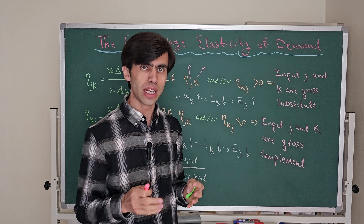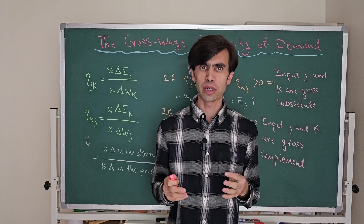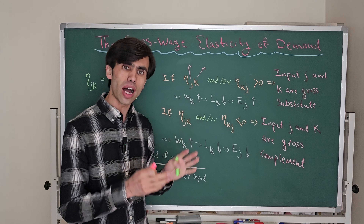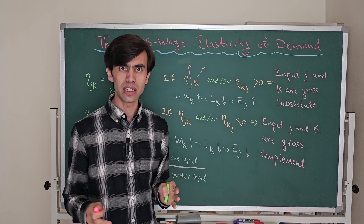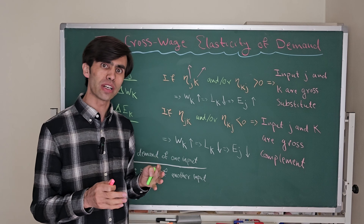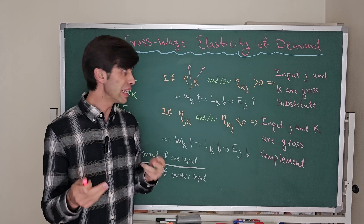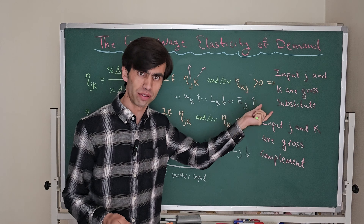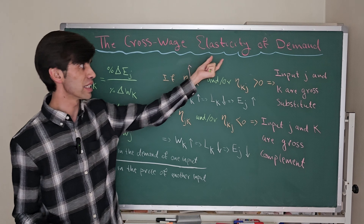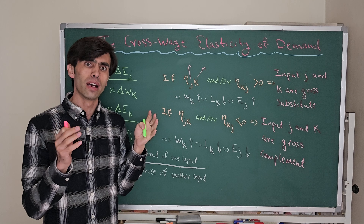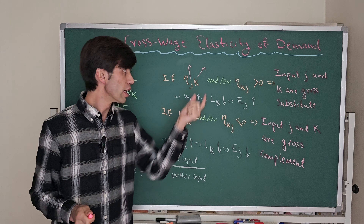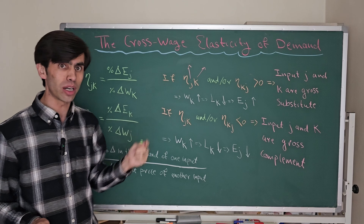When it comes to the labor market, the level of employment of a specific type of labor is not only determined by its own wage rate, but also by the price level of other inputs needed to produce a specific output. That's why we need to know the cross-wage elasticity of demand in order to determine the employment level of a specific type of labor in the market.